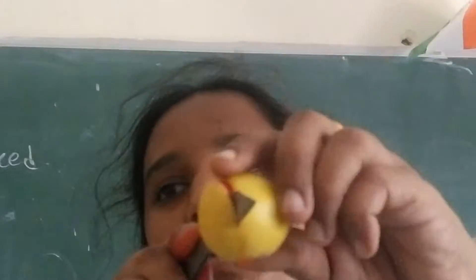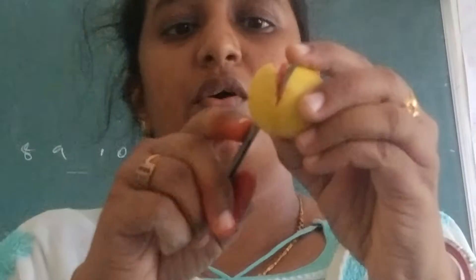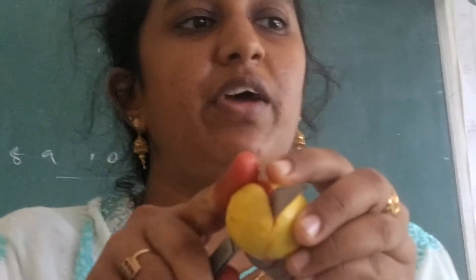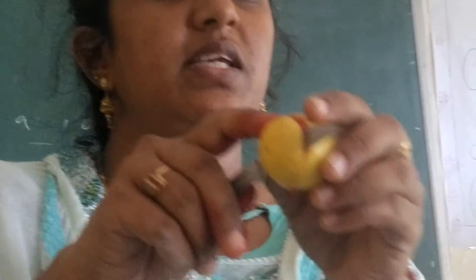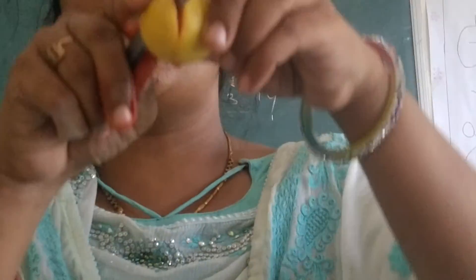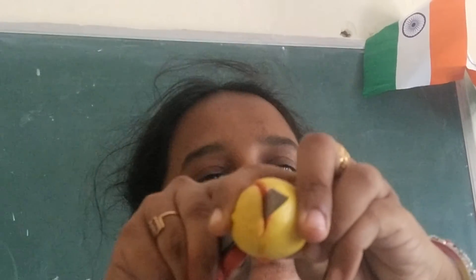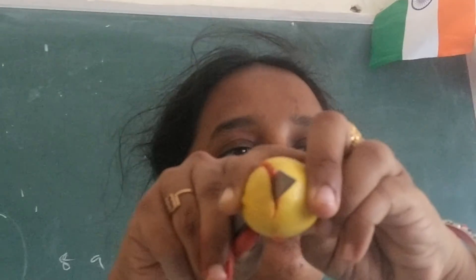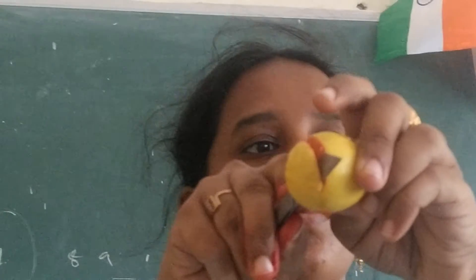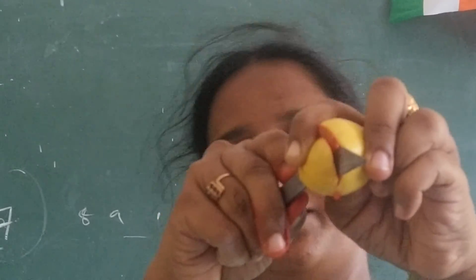Now you have understood that by using natural indicators we can identify whether the substance is acidic or basic. Lemon is acidic in nature. Which acid is present in lemon? Citric acid! Very good.